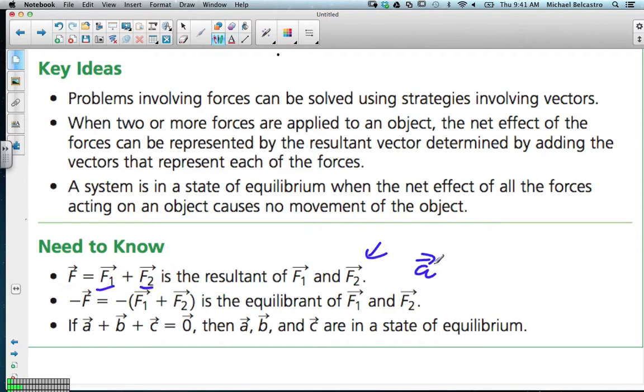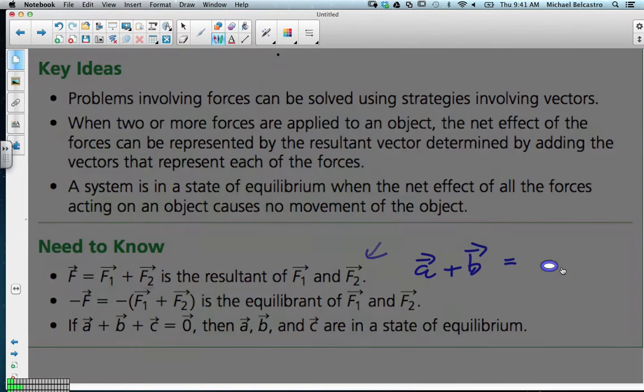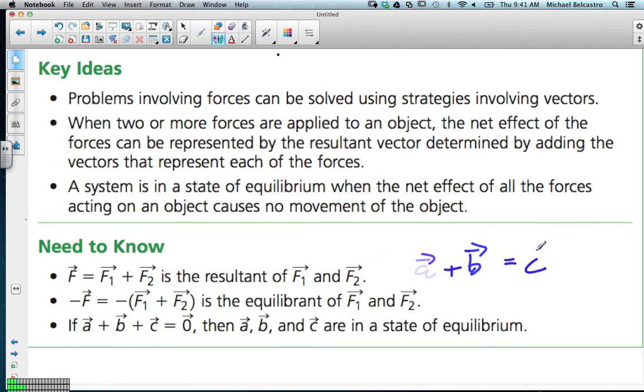The same idea if we had vector A and we were to add it to vector B, it would create a third vector, a resultant vector in our case, maybe we would name it C. That's all this one is, very similar to what we had done in chapter 6.